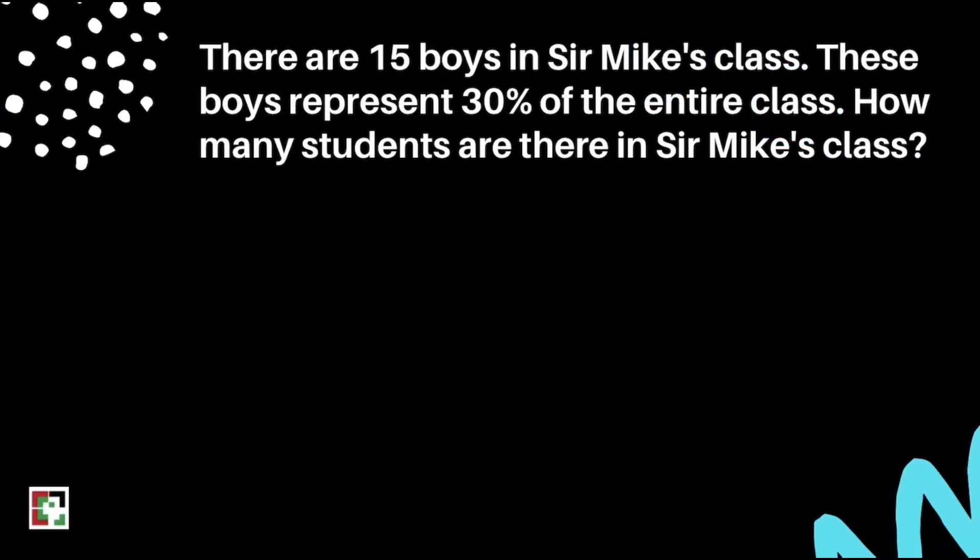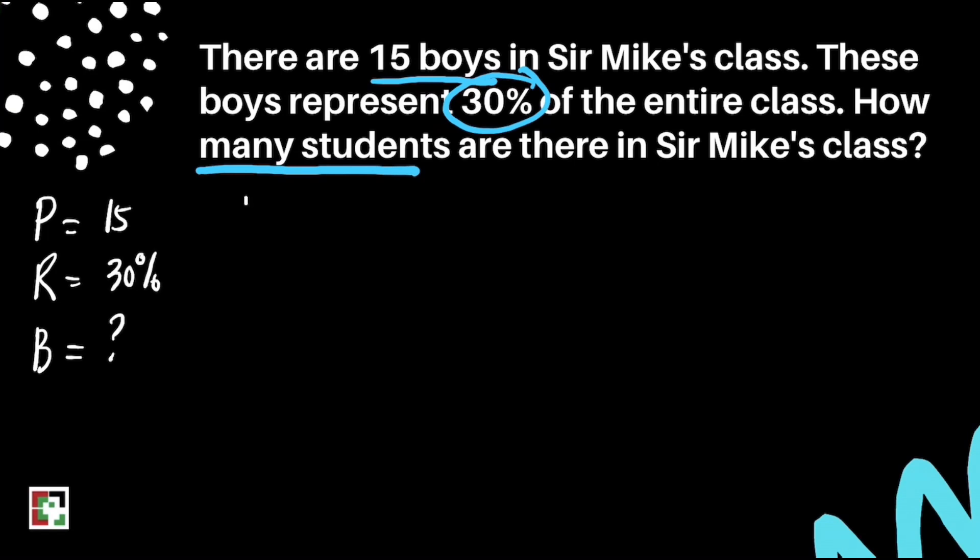Another question. There are 15 boys in Sir Mike's class. These boys represent 30% of the entire class. How many students are there in Sir Mike's class? Let's identify our given. We have 15 boys, 30%, and the number of students in Sir Mike's class. We have P, R, and B. Our percentage is 15, our rate is 30%, and we're looking for the base.